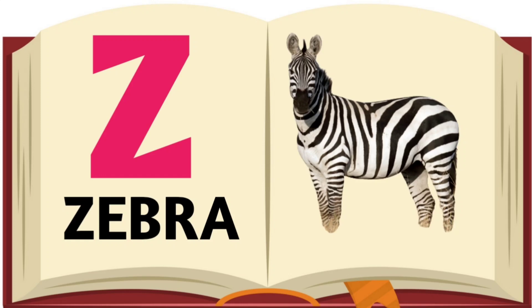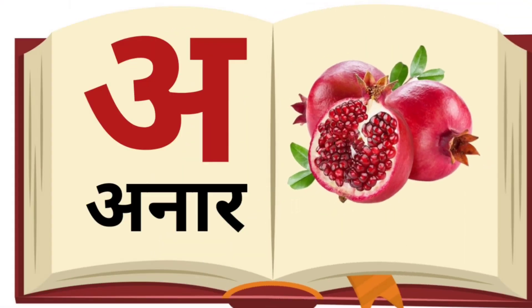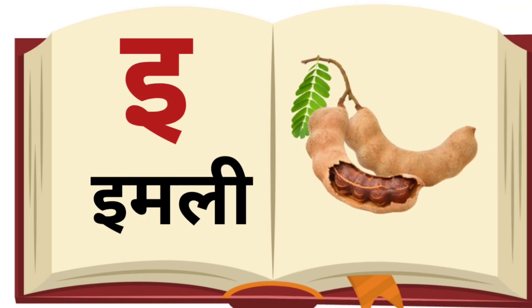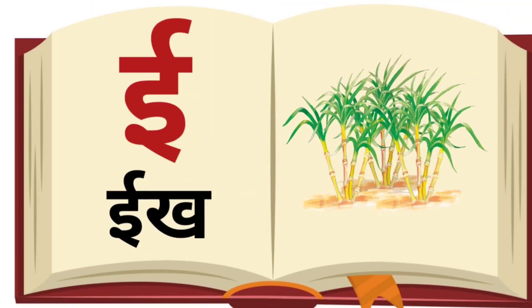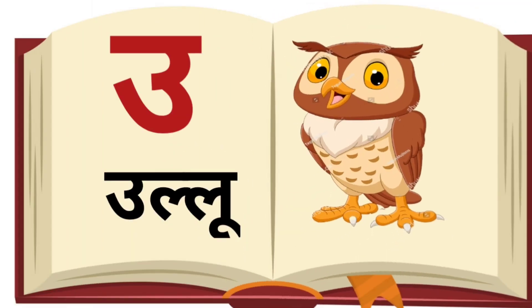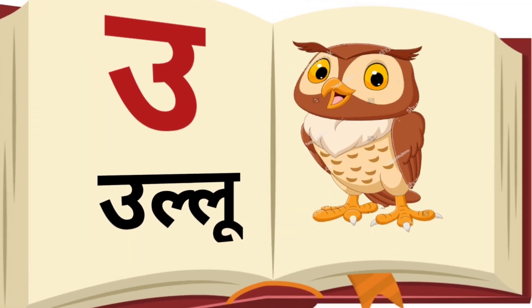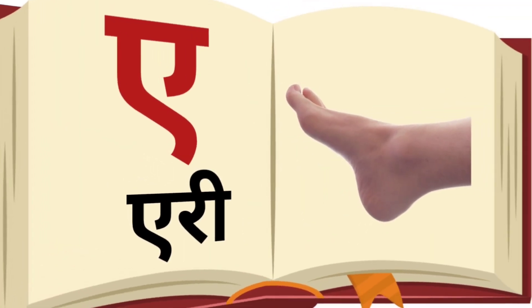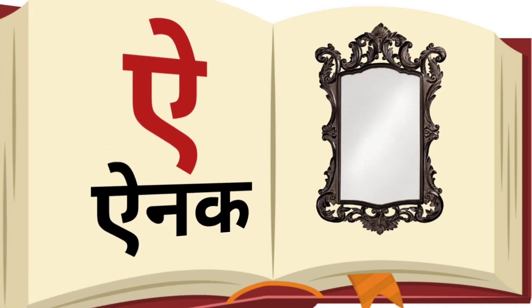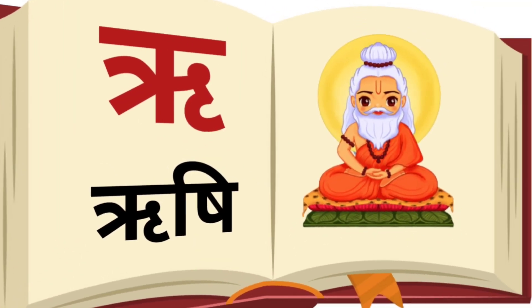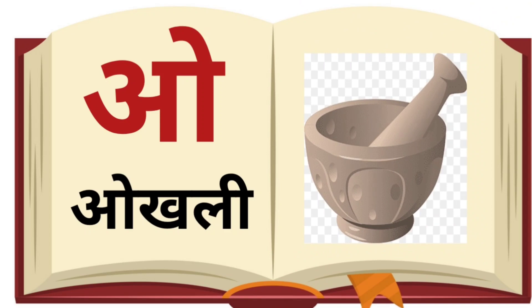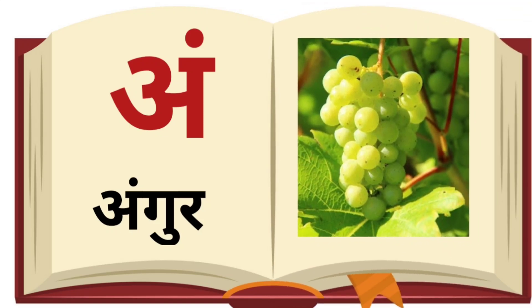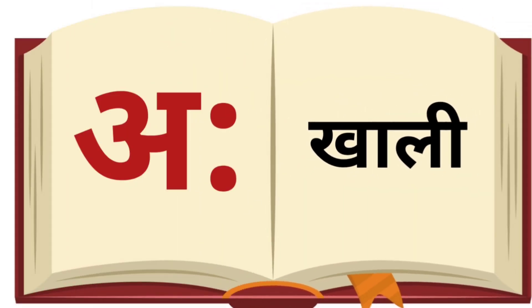U for Umbrella. A rhyme about vowels and letters follows in Hindi/Gujarati, referencing short and long vowel sounds: chhoti, badi, and various letters including Imli, Ullu, Ukhli, Angur.